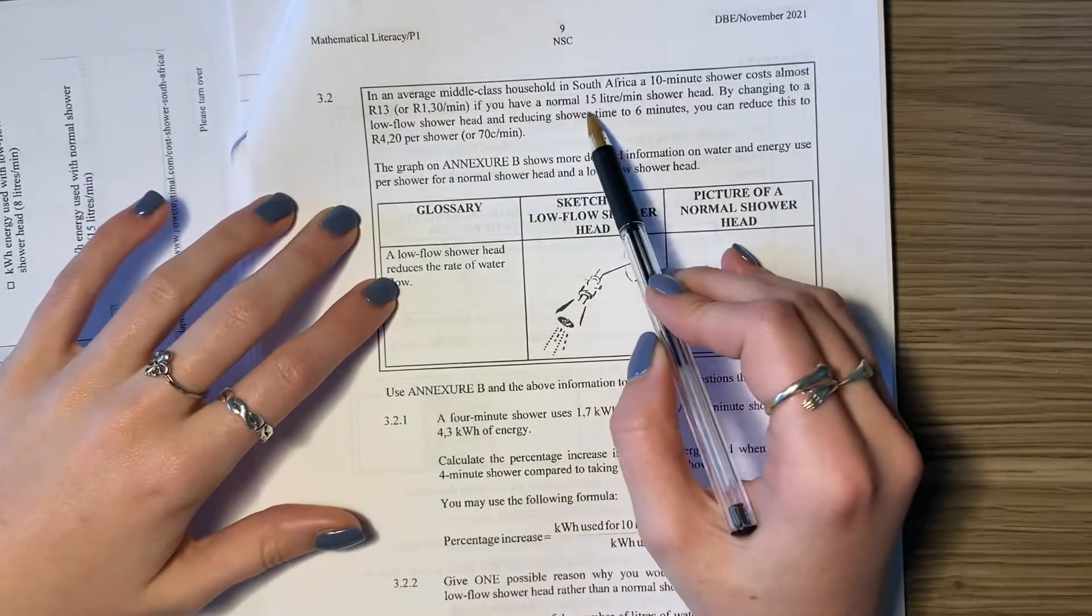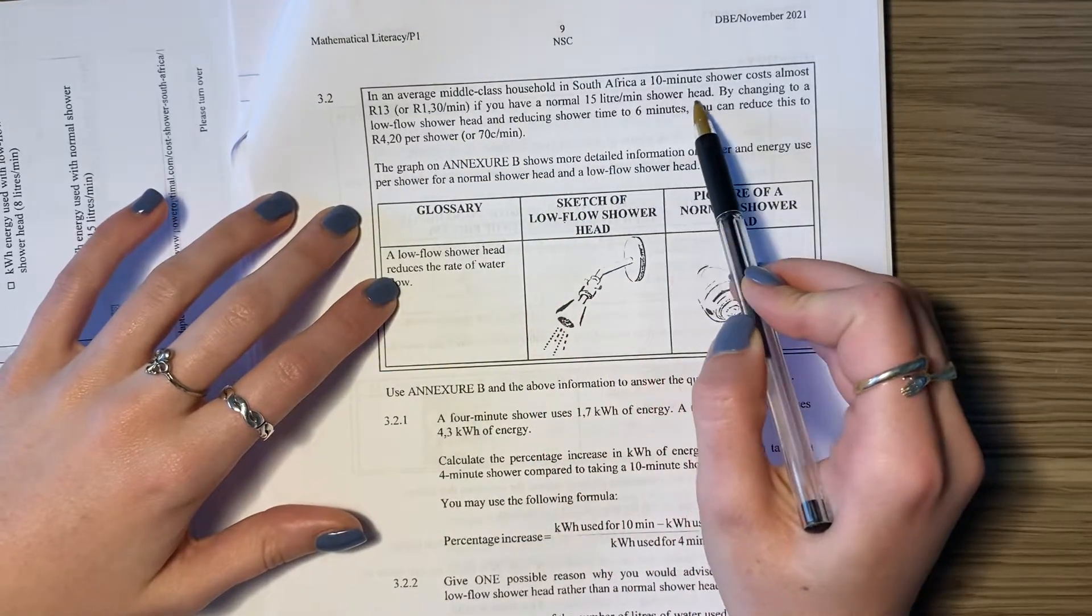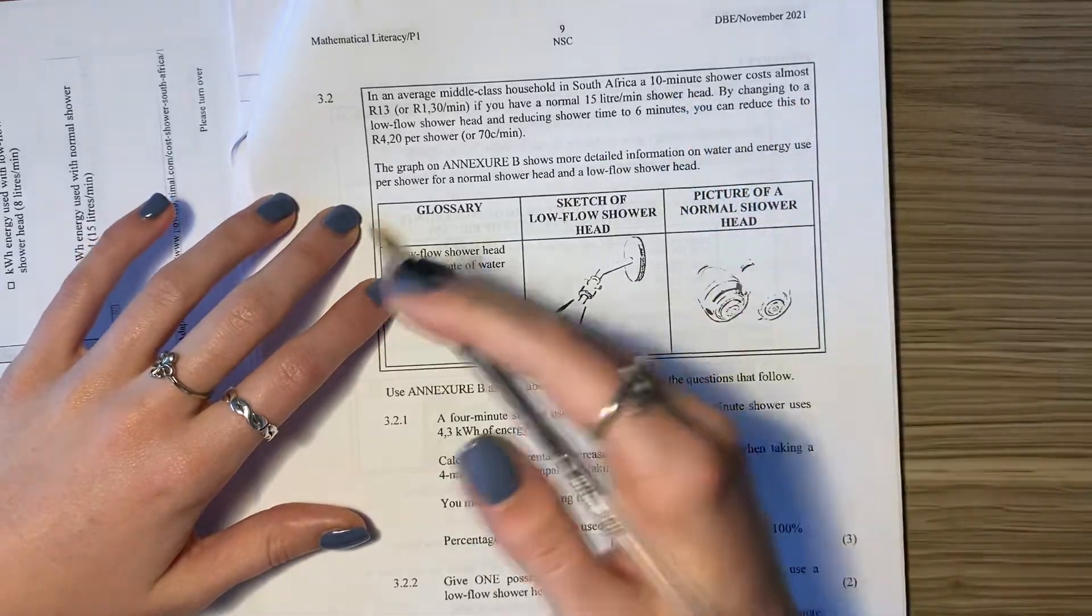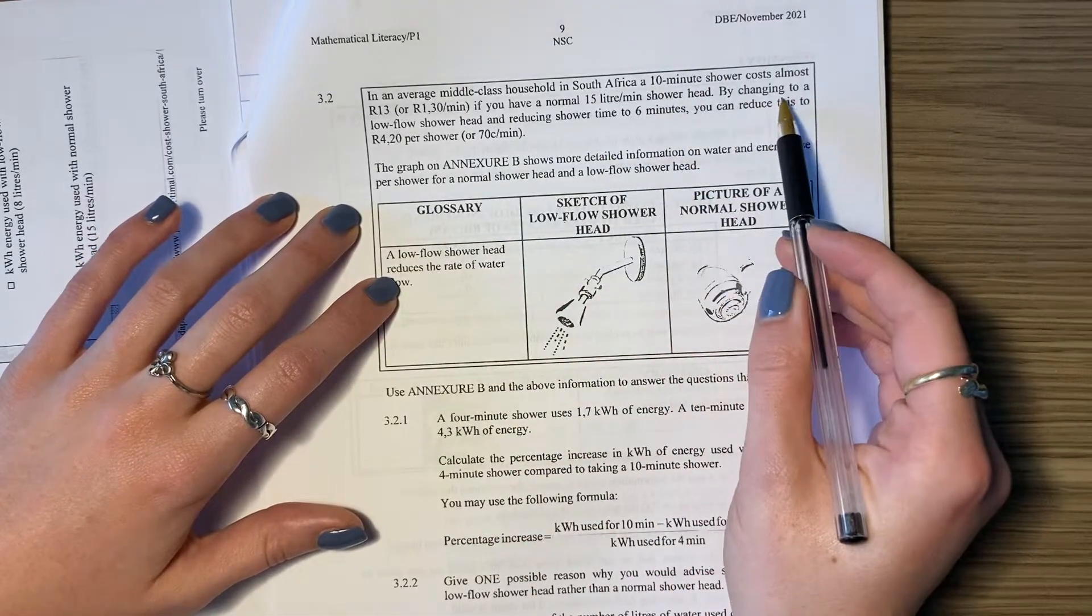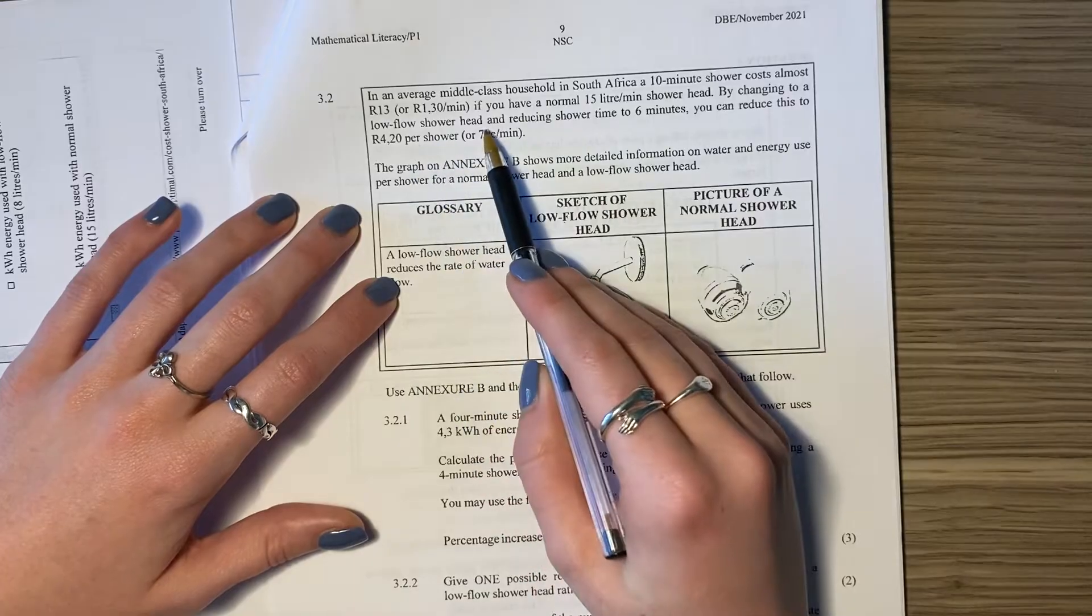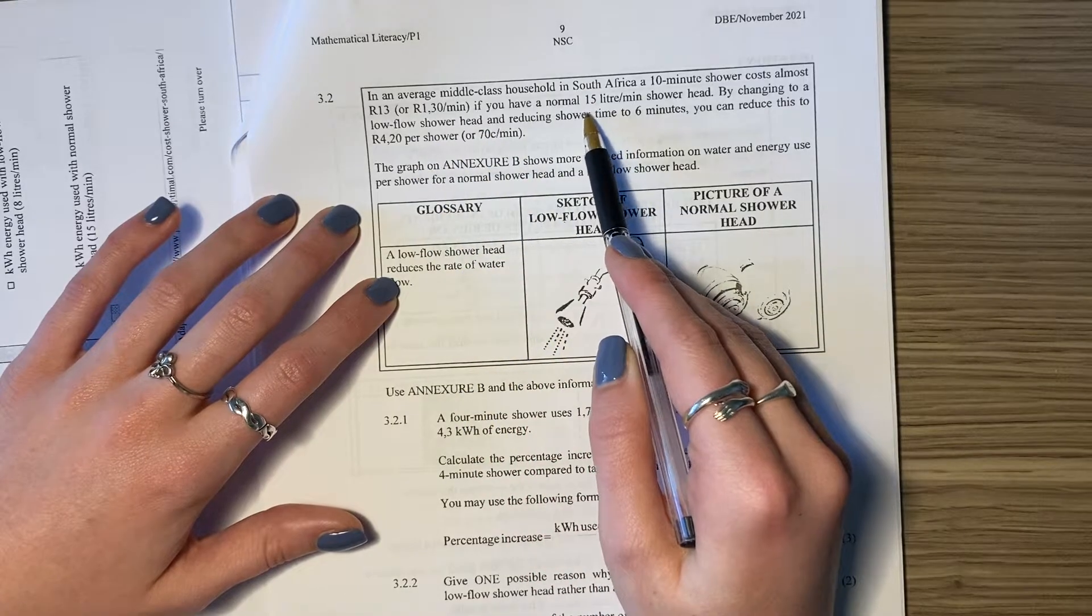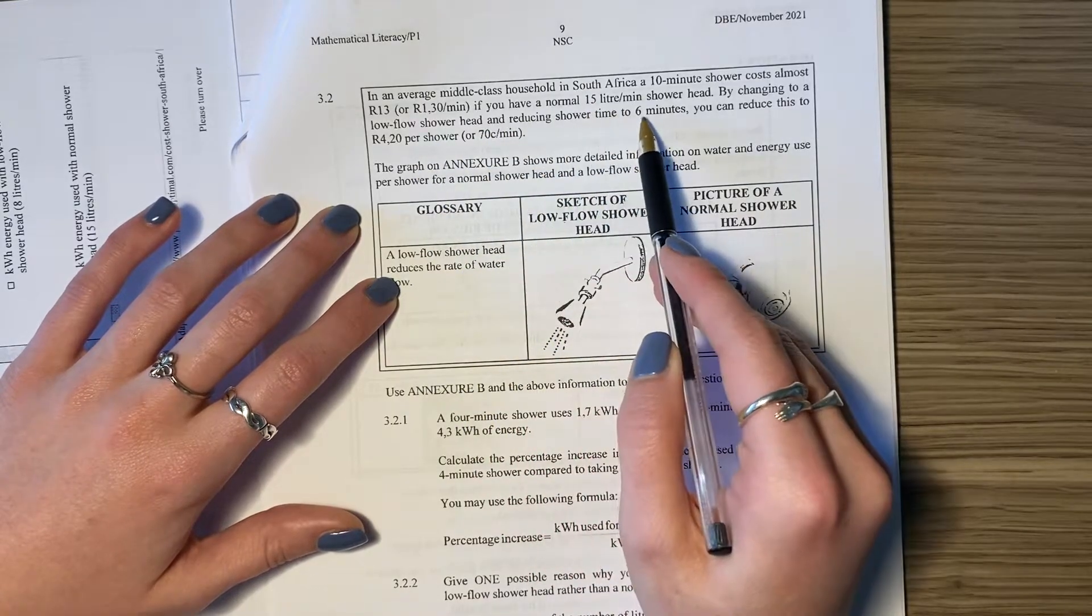If you have a normal 15 liter per minute showerhead—that's basically how much water is coming through your showerhead every minute—by changing to a low flow showerhead, that basically means fewer liters coming through, and reducing shower time to 6 minutes...